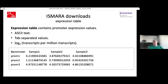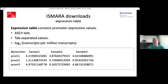We also provide an expression table — a tab-separated file containing promoter expression values for every promoter-sample pair. Rows are promoters, columns are samples, and values are log TPM values. If you would like to do additional analysis on expression, you can use this table.